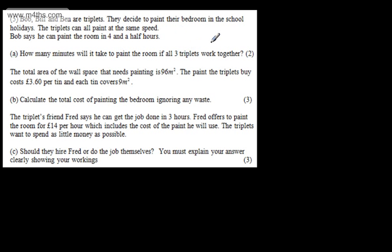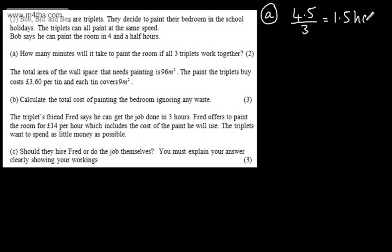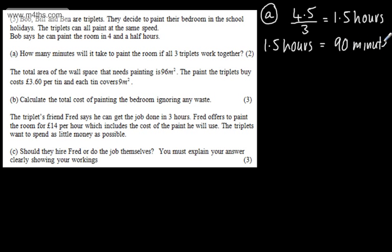Bob says he can paint this in four and a half hours, so it'll take one third of that time if all three triplets work together. So in part A, we'll have 4.5 hours divided by three. That gives us 1.5 hours. We need to give our answer in minutes, and 1.5 hours is equal to 90 minutes. We get one mark for the answer of 90 minutes and one mark for the workings.